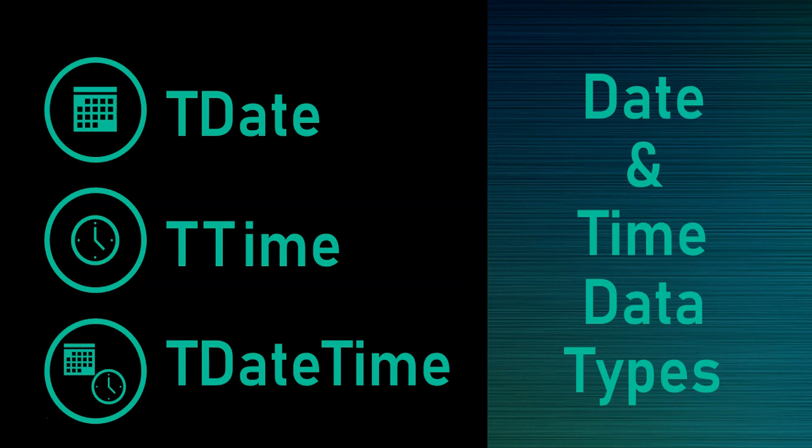You can store a date in a TDateTime variable — it'll just store what it can and leave the time as a default, which is normally midnight. And you can store a TTime value into a TDate variable, and it will leave the date as the default, which is some day in 1899 — that's the first date it can store. So you can use them interchangeably.